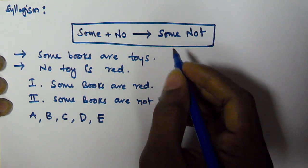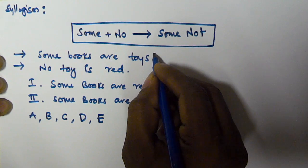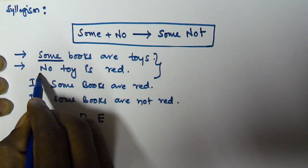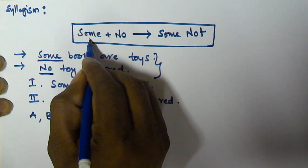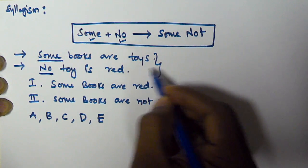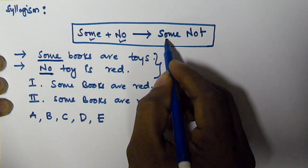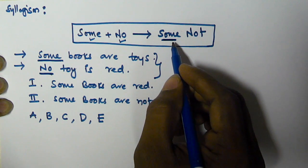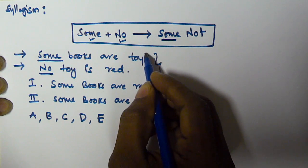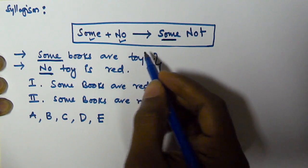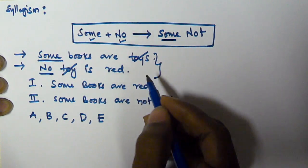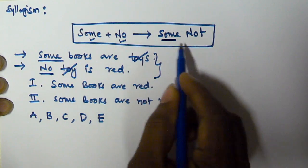Now let's look at the two given syllogism statements. The first syllogism starts with 'some' and the second starts with 'no.' Before applying this rule, we must observe that the predicate of the first statement must equal the subject of the second statement. Here 'toys' appears in both, so both are the same type. We can apply the rule: some plus no gives some not.